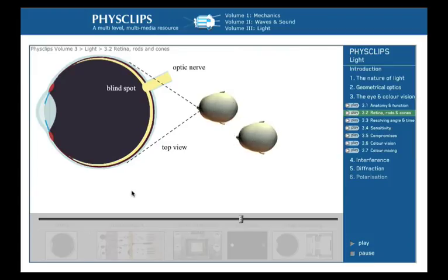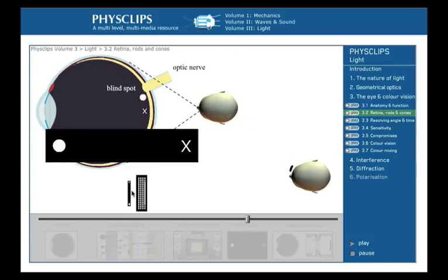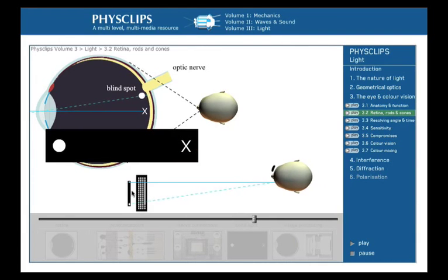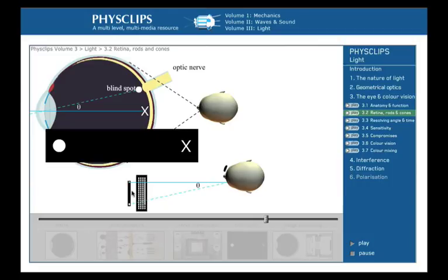You can measure the angle of the blind spot in the fovea like this. Close your right eye, fixate on the X, then move your head towards the screen. When the dot disappears the dot and the cross subtend the blind spot angle at your eye.